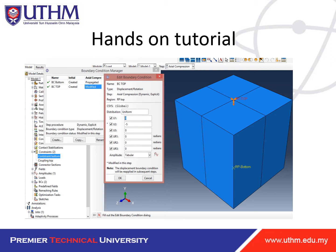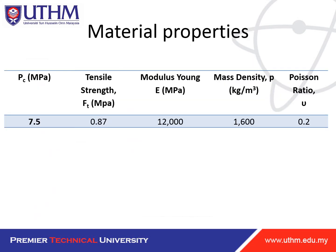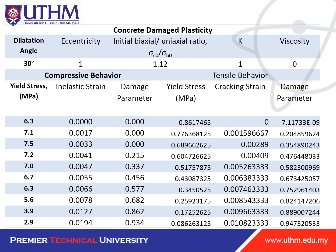Before the next video, let me explain the hands-on tutorial. I will show you how to simulate a cube. An example cube with boundary conditions and material properties will be used. The material properties are for foam concrete: compressive strength 7.5 MPa, tensile strength 0.87 MPa, Young's modulus 12,000 MPa, density 1600 kg/m³, and Poisson's ratio 0.2. Remember to convert these to Abaqus units — for example, density in tonnes per cubic millimeter.